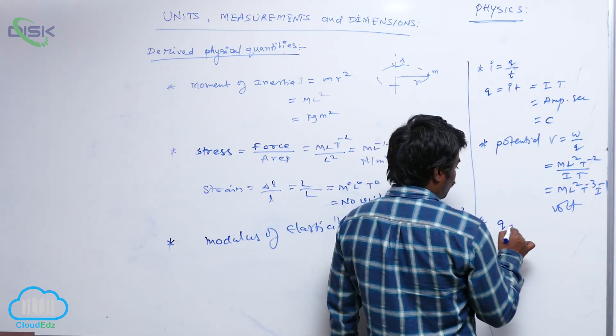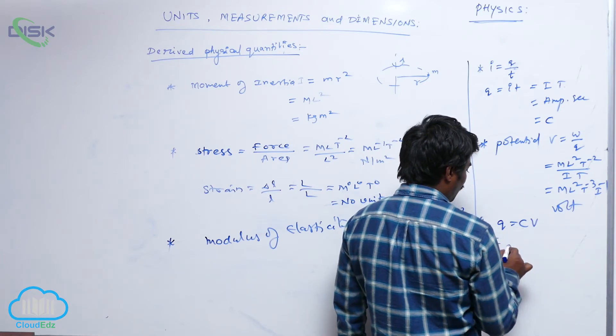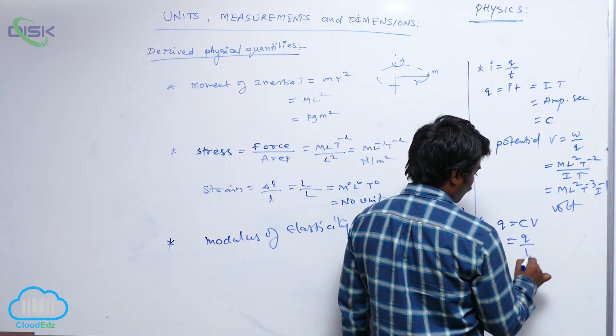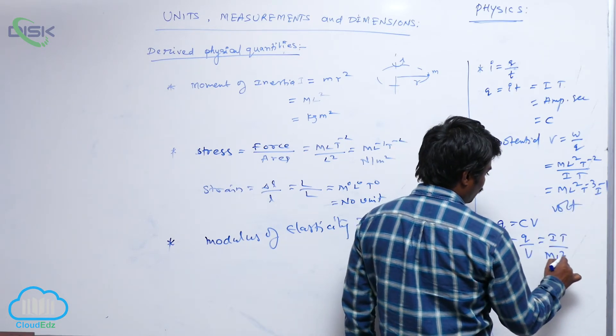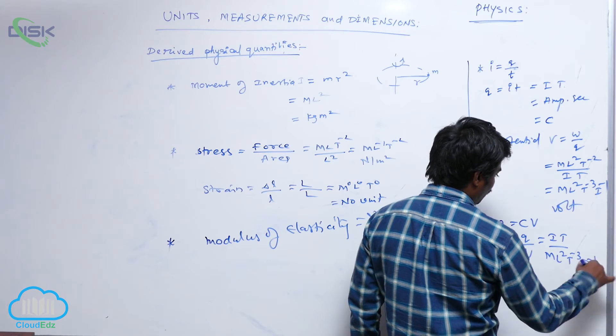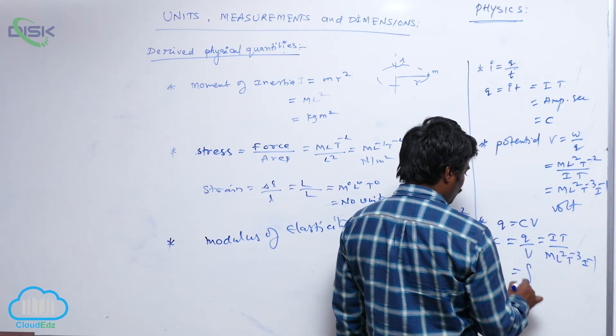Next, C is the capacitance, that is q by v. This is i t by v. Dimensional formula is m l square t minus 3, i minus 1, so the unit is farad.